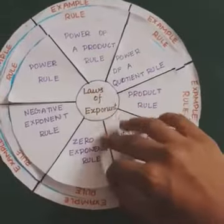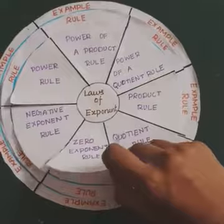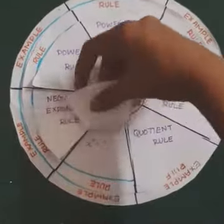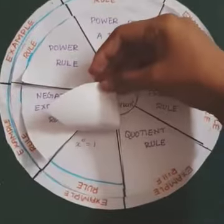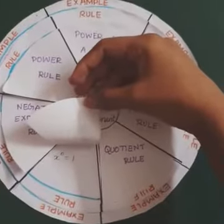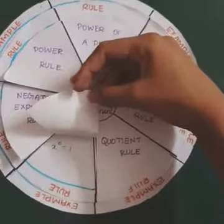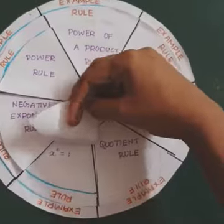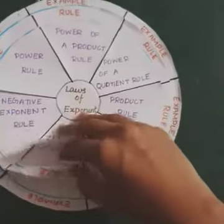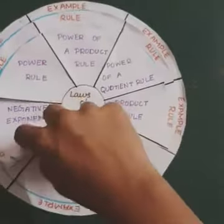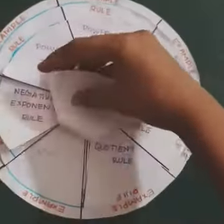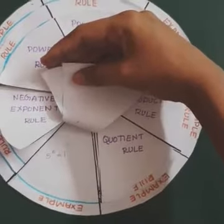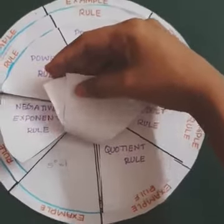Next is the zero exponent rule. Its rule is: x^0 = 1. An example is 5^0 = 1.